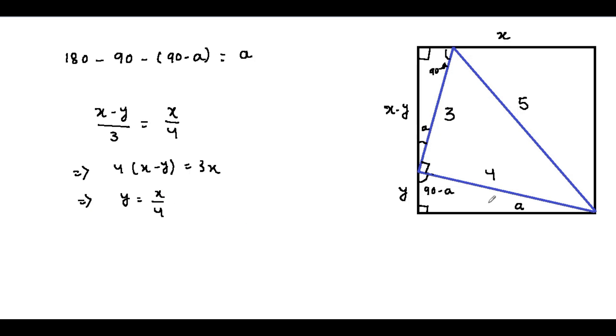Now we will substitute that into our diagram. This length will be x by 4. Now we can solve for x because we have a right angle triangle.